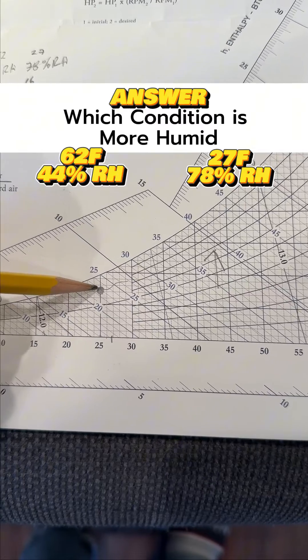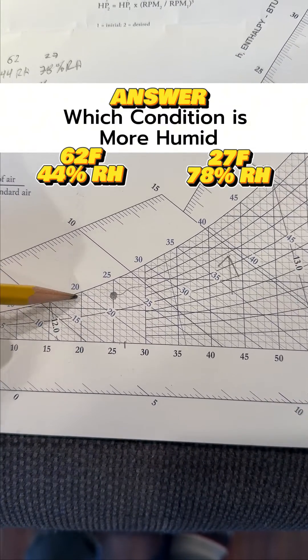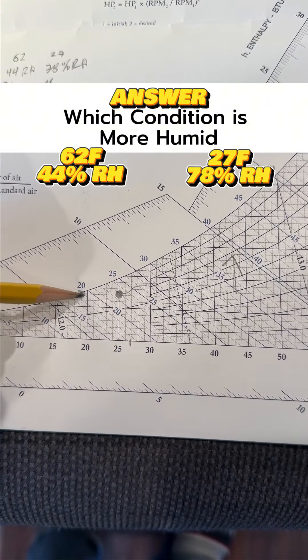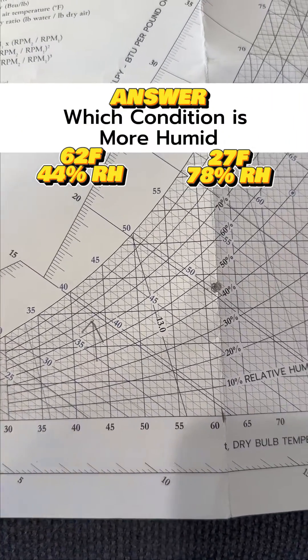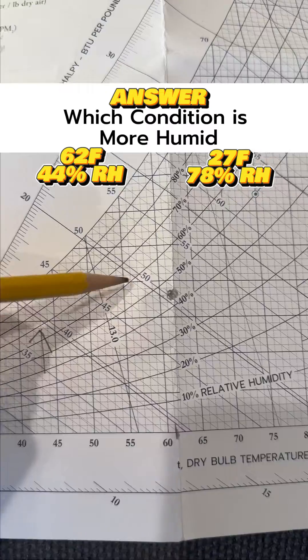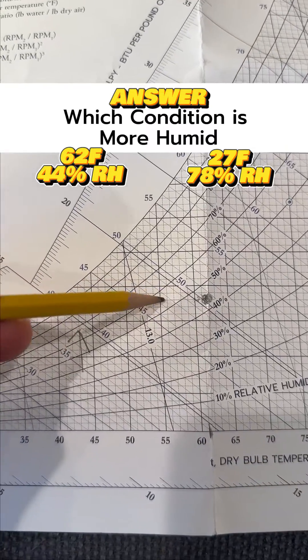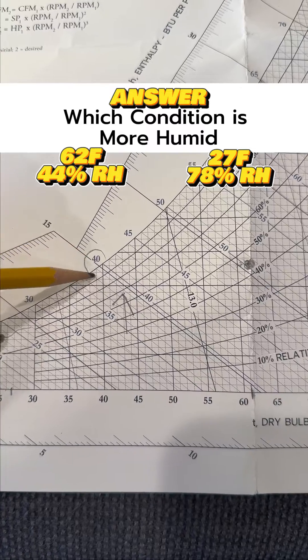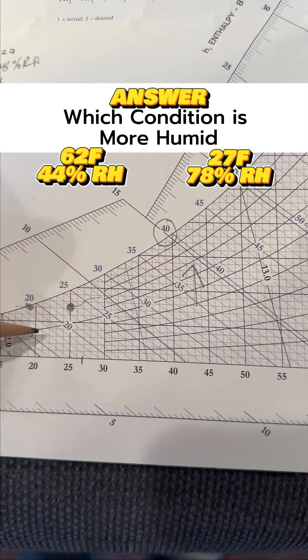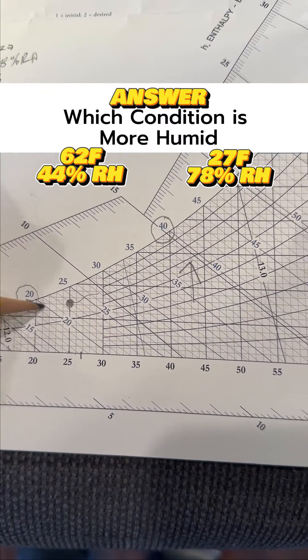And you can see the dew point, which we didn't really talk about, of this air is around here, which is about 19 degrees, maybe 20 degrees. The dew point of this condition here, if we go to the left, is about 40 degrees. So dew point is a good indicator of the amount of moisture in the air as well.